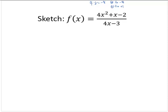So let's analyze it. Let's find any vertical asymptotes. Setting the denominator to 0, we find a vertical asymptote at x equals 3 fourths.